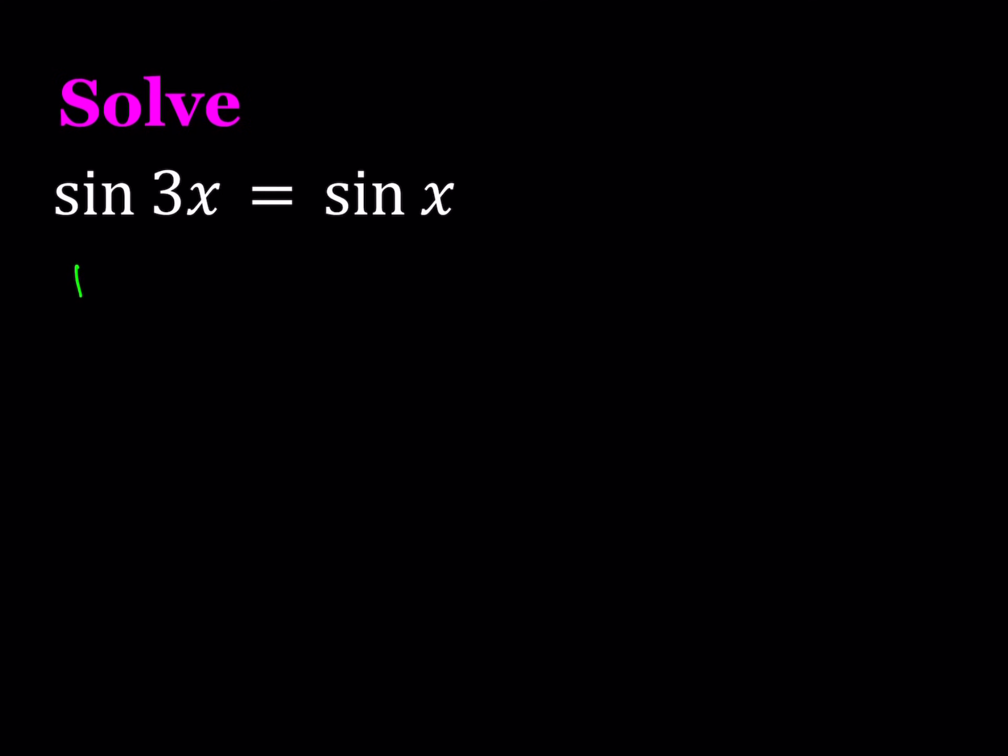Let's start with the first one. The first method basically involves using the formula for sine of 3x. Sine of 3x can be written as 3 sine x minus 4 sine cubed x. And if I do that and put everything on the same side, I get the following.